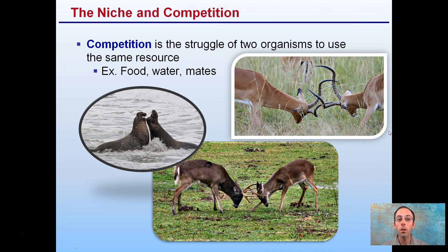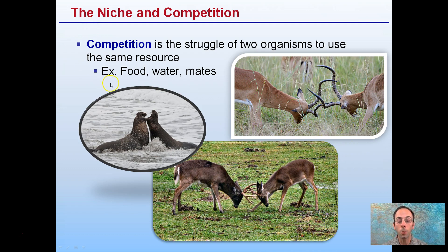Competition is a struggle of two organisms to use the same resources. The resources are limited. We see individuals competing for mates. There's a limited amount of food, water, and mates, which results in competition that occurs among animal species.